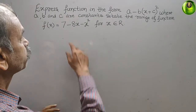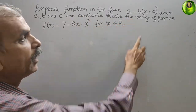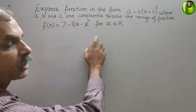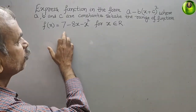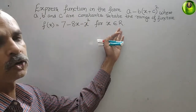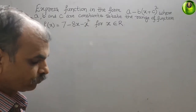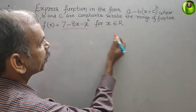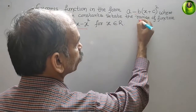The question is: express the function in the form a minus (bx + c) whole square, where a, b, and c are constants. State the range of the function f(x) = 7 minus 8x minus x squared, for x belonging to R. We need to convert this function into the given form and also find the range.